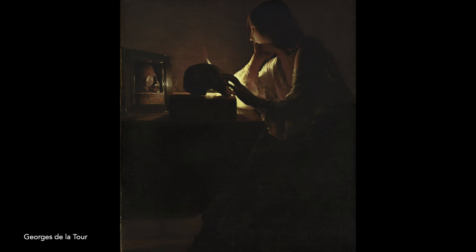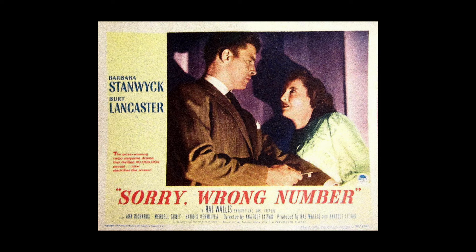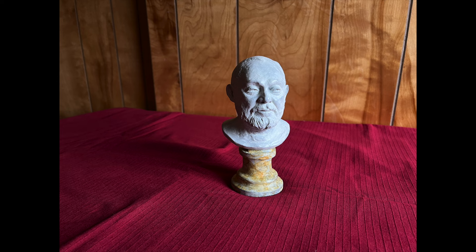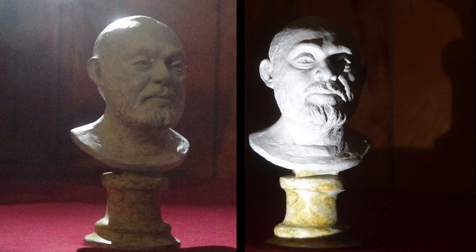A movie genre, film noir, is based on this. Edward Hopper was very influenced by these films. Lighting normally comes from above and the side, but other lighting directions can have striking effects.